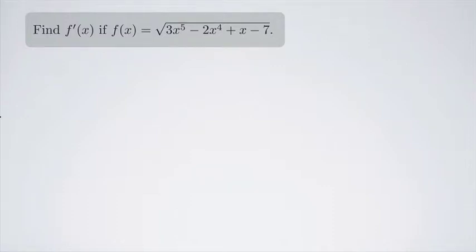Find f prime of x if f of x equals the square root of 3x to the 5th minus 2x to the 4th plus x minus 7.